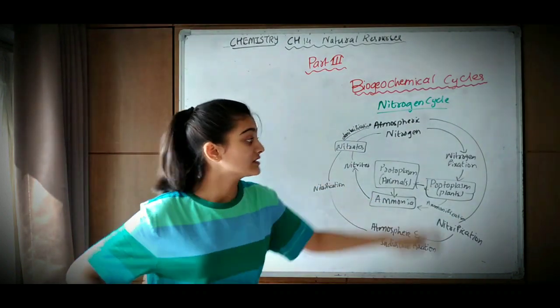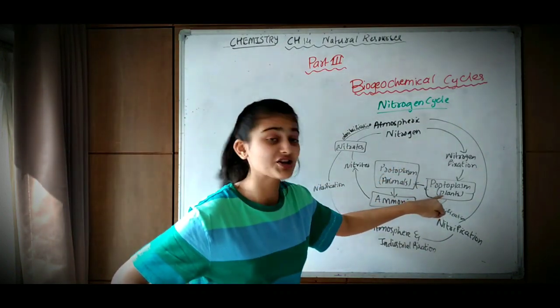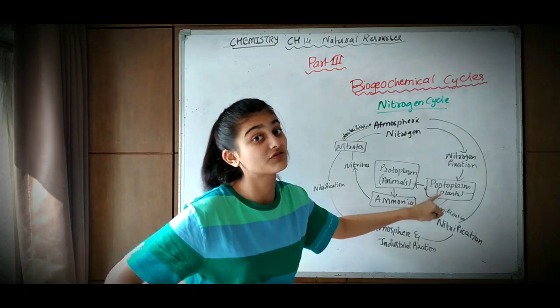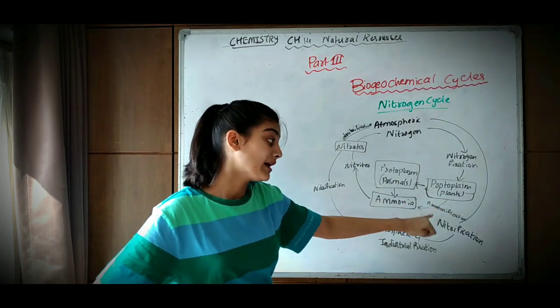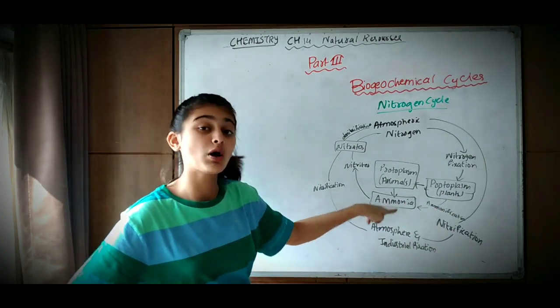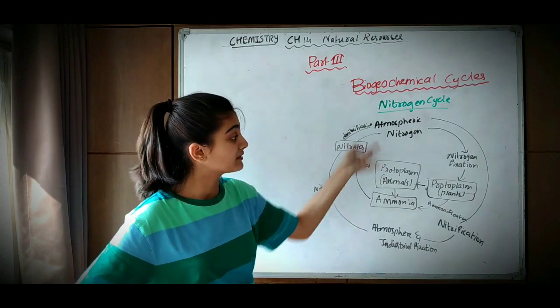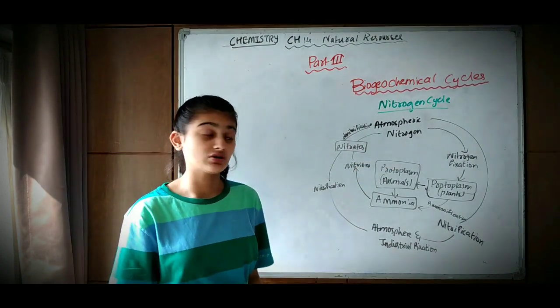Another cycle: due to nitrogen fixation, nitrogen gets converted into the form of plants. By ammonification it gets converted into ammonia, and then back into atmospheric nitrogen.